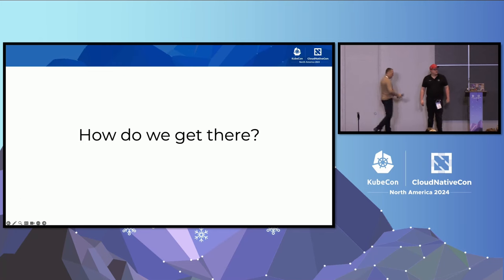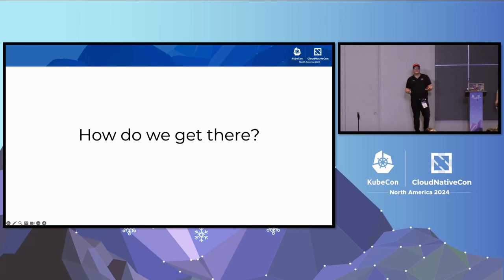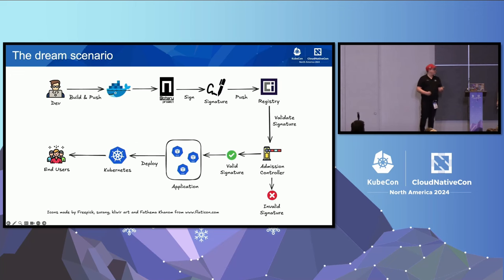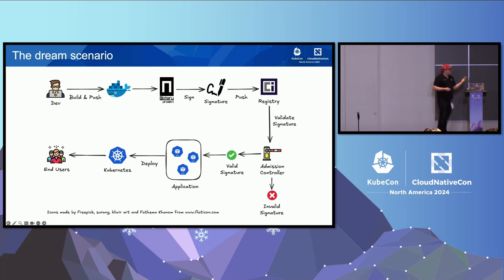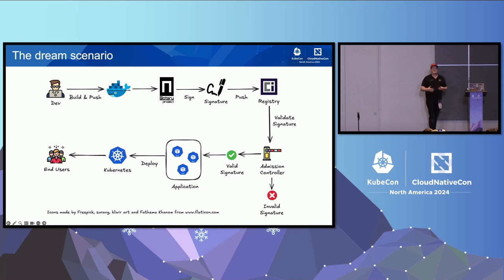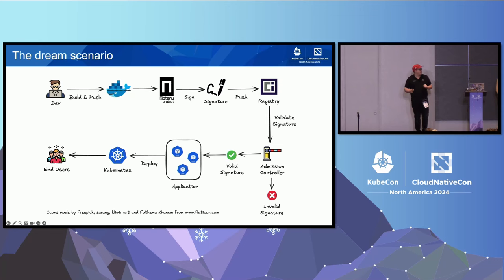Now we've learned we should probably be concerned with integrity in our supply chains. Let's first look at the dream scenario — what we would have in an ideal world. Ideally a developer would push their containers, ideally they would have already signed their commits, ideally with a hardware token or something. Then in the pipeline after it's built it should be signed. You push, you deploy it to your Kubernetes cluster, and you can actually verify that the artifact has its integrity using all the common tools available in Kubernetes. In the ideal world every single step is done with integrity in mind.